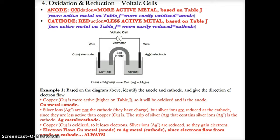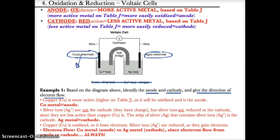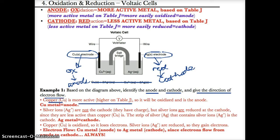Let's try an example. Based on the diagram, we have two electrodes: copper and Ag. Looking up Cu and Ag on Table J, Cu is higher up or more active. Since it's more active, it's more easily oxidized, and based on anox, the Cu side is the anode.